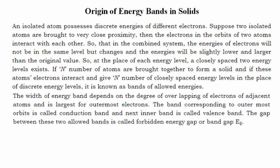At the place of each energy level, two closely spaced energy levels exist. In any solid, if there are n number of atoms present and brought together to form a solid, and their electrons interact, then there will be n number of closely spaced energy levels in place of discrete energy levels, known as bands of allowed energies. The width of the allowed energy band depends on the degree of overlapping of electrons of adjacent atoms, and it is largest for the outermost electrons.